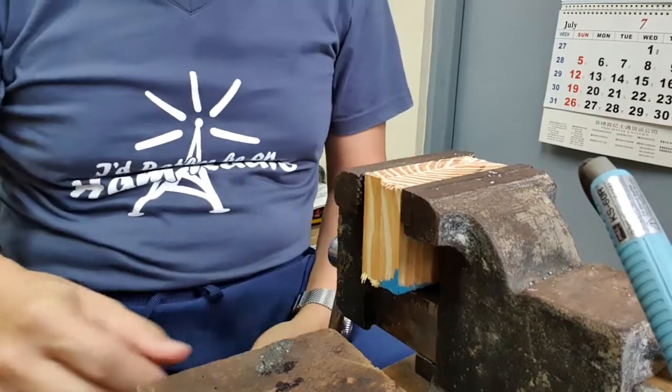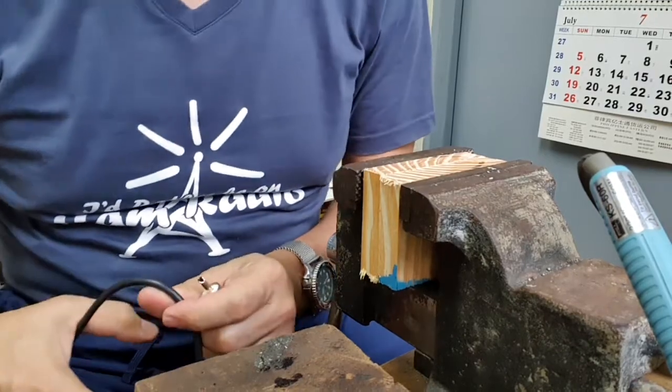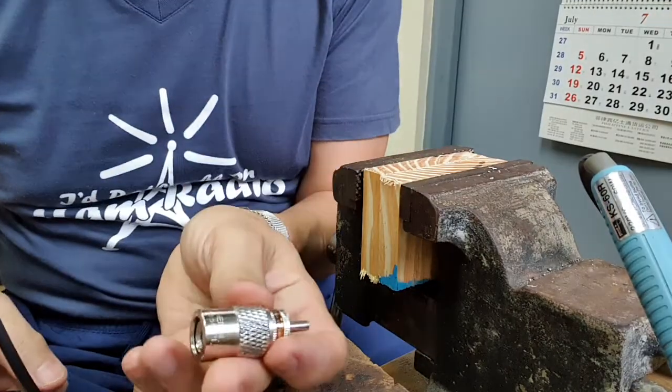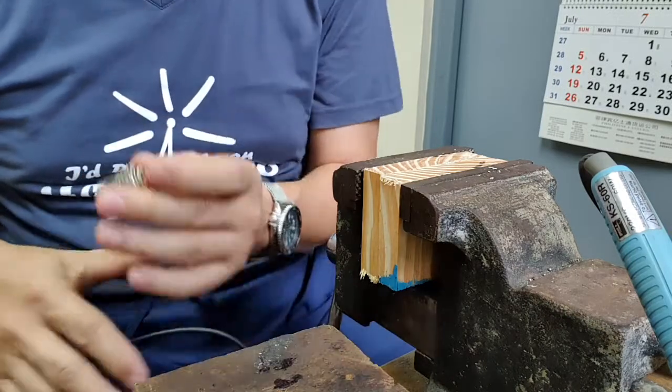Hi, I just want to share with you how I work on connecting a PL259 to an RG58 coax cable.